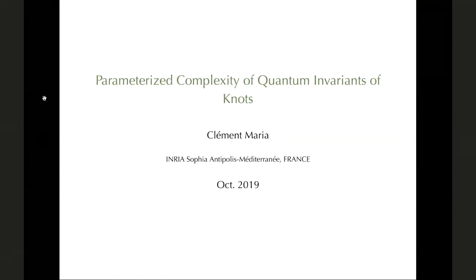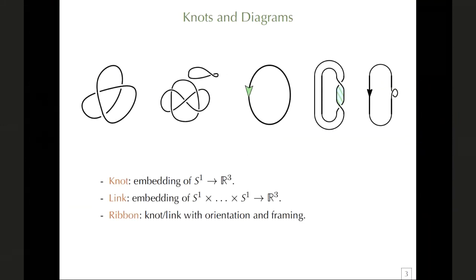When I'm talking about knots, I'm talking about embedded circles in three-dimensional space. When you have only one component it's called a knot; when you have several it's called a link. There's also a refinement called a ribbon, where you take into consideration the orientation — you see an arrowhead giving orientation to your component — and also twists in your ribbon, giving you a framing.